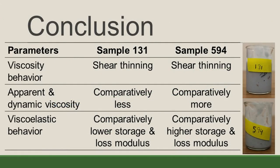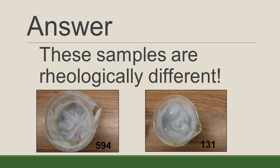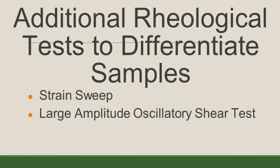In conclusion, if we look back at our data, we realize that both samples are shear-thinning and followed the power law, but that sample 594 had a higher viscosity and had a higher storage and loss modulus. So, to answer the original question, the samples are rheologically different. However, this is just the start of what tests we could have run to differentiate these two samples.